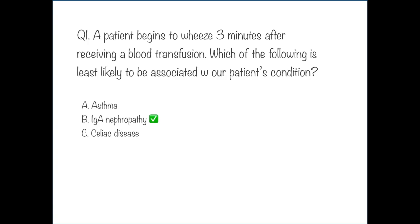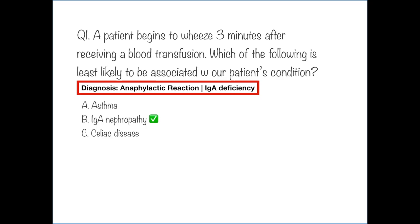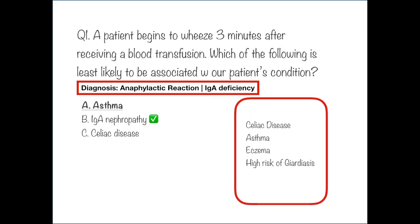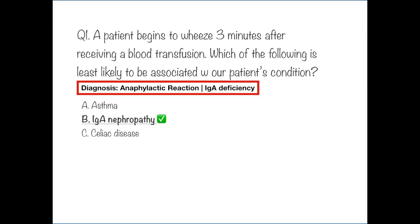This patient's wheeze almost immediately after transfusion indicates an anaphylactic reaction, which takes place in patients who have IgA deficiency. IgA deficiency is common in people with celiac disease, and is also associated with atopic conditions like eczema and asthma. IgA deficiency additionally increases the risk of giardia infection. IgA nephropathy involves deposition of immune complexes with IgA in the mesangium of the kidney, and is not associated with IgA deficiency.